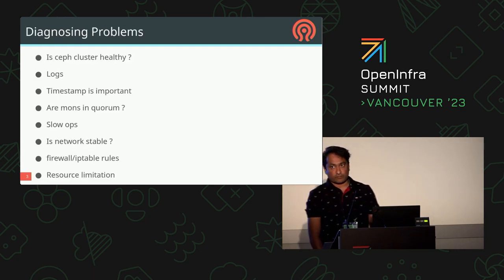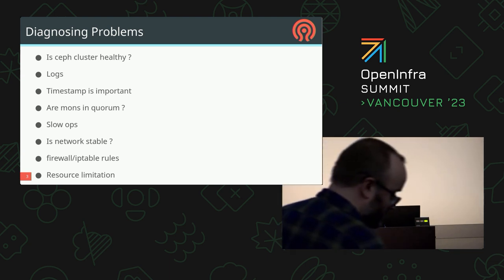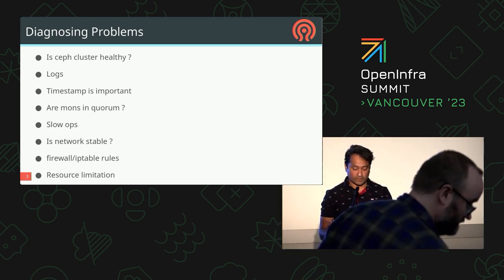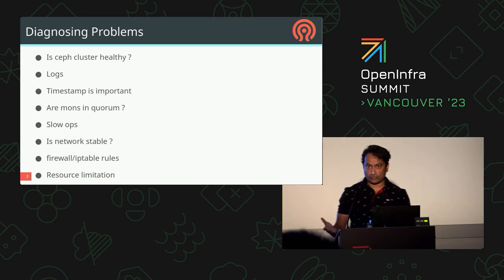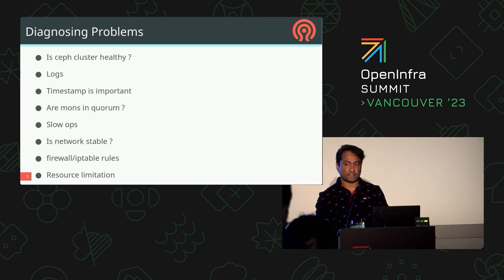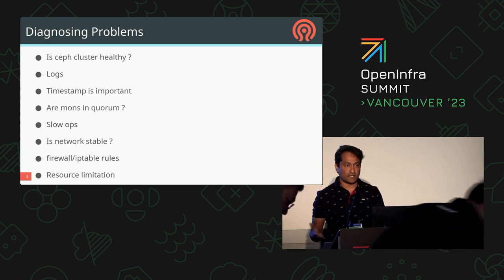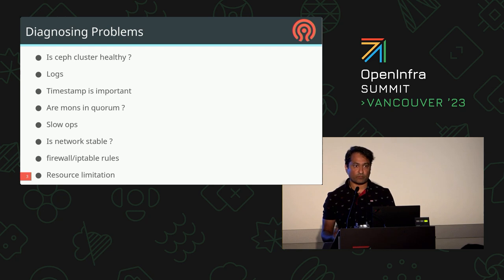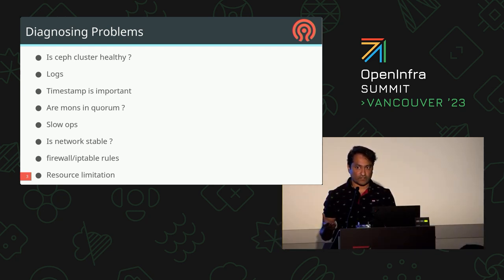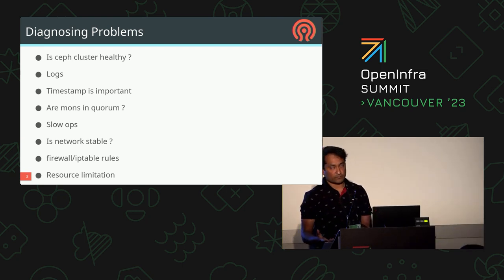The first topic is diagnosing problems. If you are seeing some problems in the safe cluster, you usually start with a safe status and see how the cluster is doing — whether you are seeing health warn or health error. That indicates you are having some problems, so you start looking for logs or additional information to find out where the real problem is. Logs are really helpful in that perspective.